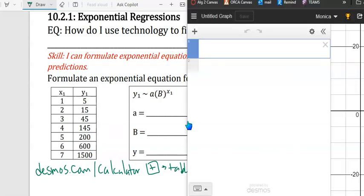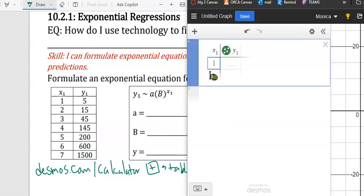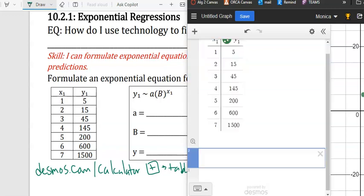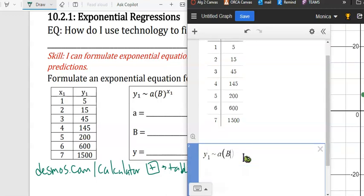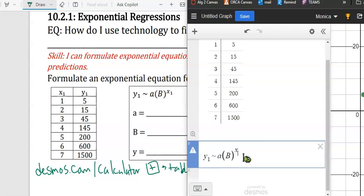We're on Desmos. Press the plus sign, click table, and type in your values. Then click the box underneath and type in the formula: Y1 tilde a times b to the x1 power.